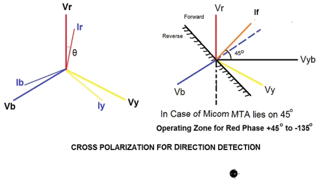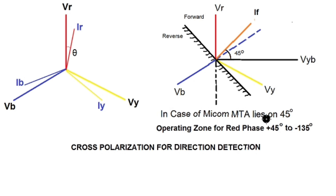How does the directional relay sense direction? In case of overcurrent relay, the directional relay senses direction by means of the cross-polarization method. When a fault occurs in the red phase, the voltage of the red phase will dip, so the healthy phase voltage is used as reference. For a red phase fault, the quadrature voltage Vyb is used as the reference. Vr and Vyb are 90 degrees apart — Vyb lags Vr by 90 degrees.